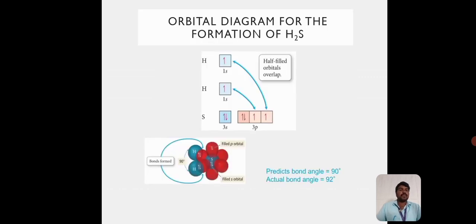The orbital diagram for the formation of H2S gas. Normally, hydrogen has one electron. Sulfur has 3S2 3P4 electronic configuration. The hydrogen has 1S orbital and then sulfur has 3S orbitals and 3P orbitals. Here, the hydrogen overlaps with the P orbitals to form the H2S molecule.